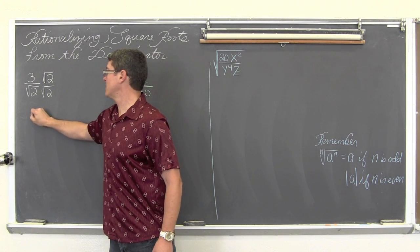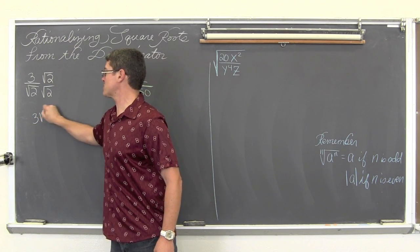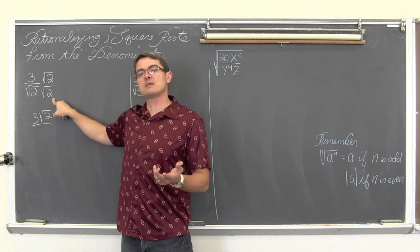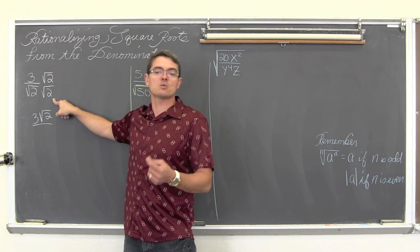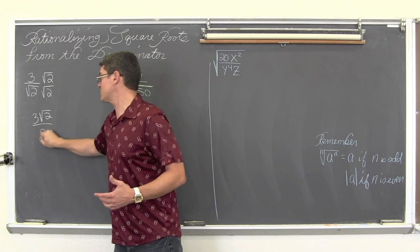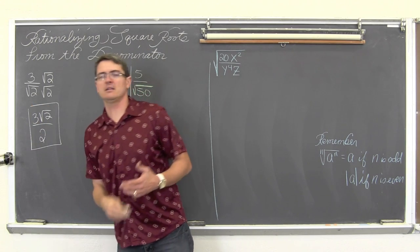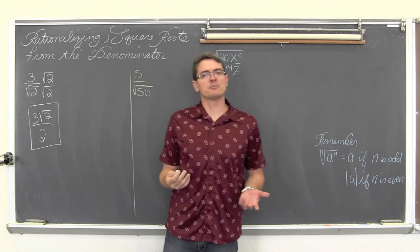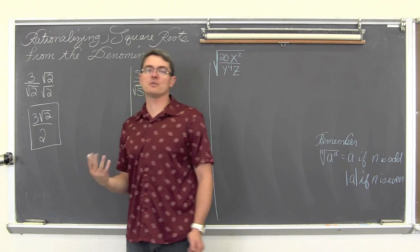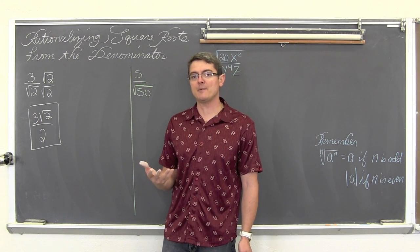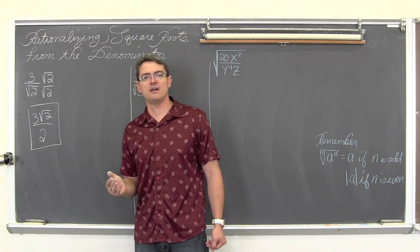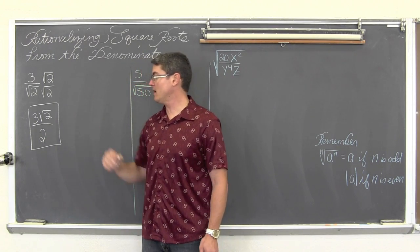We are going to multiply top and bottom by square root of 2. That gives us 3 times square root of 2 over square root of 2 times square root of 2, which is the square root of 4. The square root of 4 is equal to 2. Now we are supposed to re-simplify, but there is nothing left to do — the 3 and the 2 have no cancellation. I don't want a decimal, so that is our final answer.